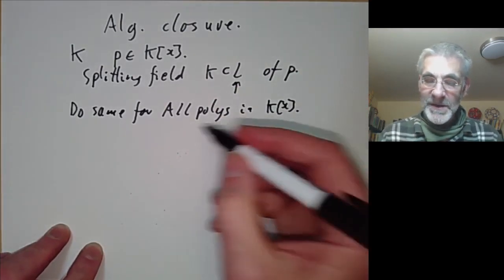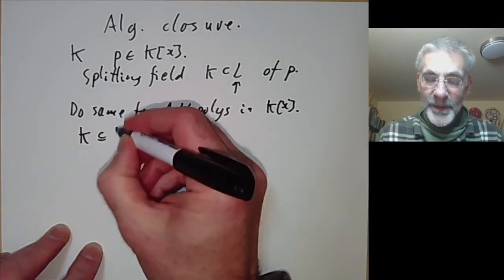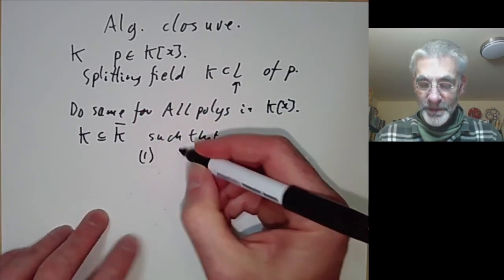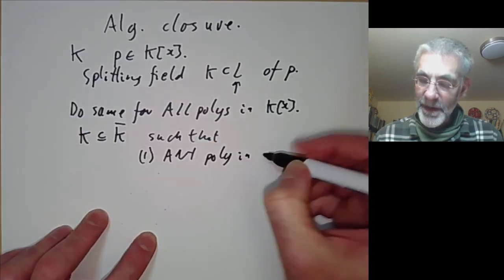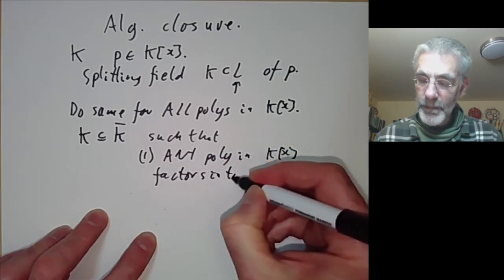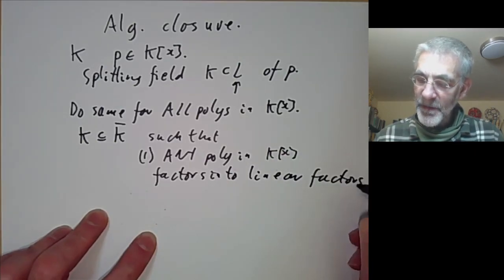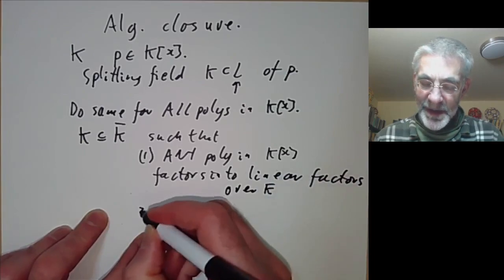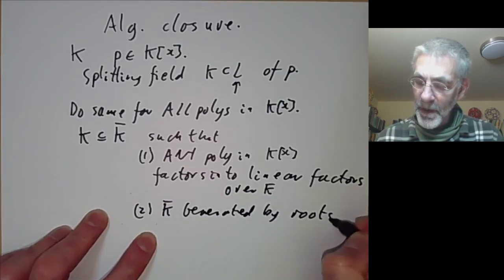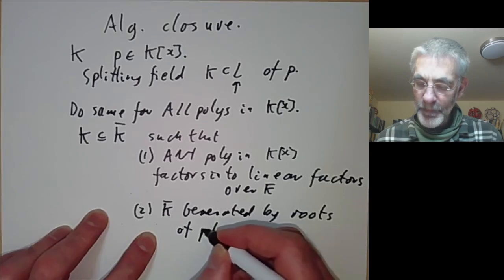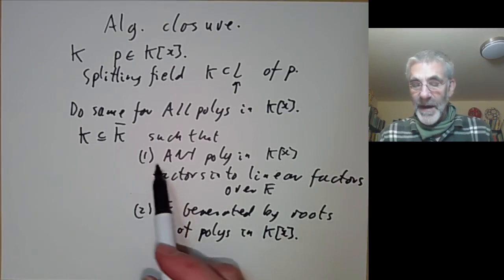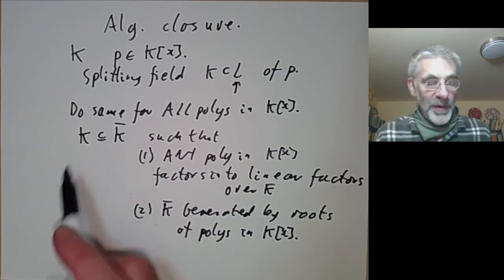What we're going to do is extend k to a field k̄ such that, first of all, any polynomial in k[x] factors into linear factors over the field k̄. And secondly we want k̄ to be generated by roots of polynomials with coefficients in k. So this is just like the definition of a splitting field except instead of doing it with one polynomial we do it with all polynomials.